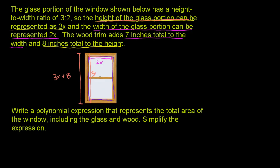When you add the wood trim, it adds 7 inches to the total width. So the total width, adding that piece on each side, is 2x plus 7. That is the total width of the window, and the total height is 3x plus 8.